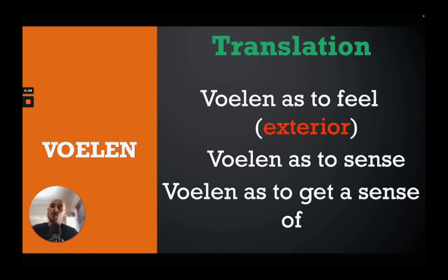We have another translation for 'to feel,' and that's just 'voelen.' The translation of 'voelen' is 'to feel,' but it can also mean 'to sense' or 'to get a sense of.' Here we're talking about an exterior feeling — something we can feel from the outside. For instance, when it's cold we feel the cold from the outside; when we touch something with our hands we can feel whether it's hard or soft. This is now the context for 'voelen.'